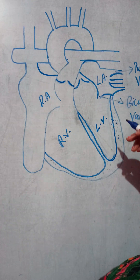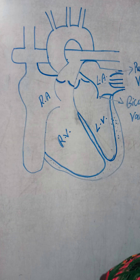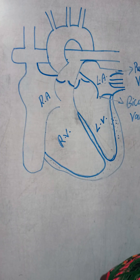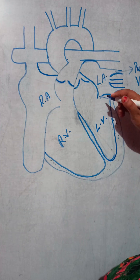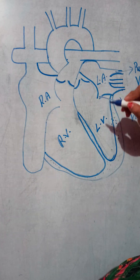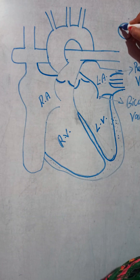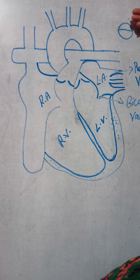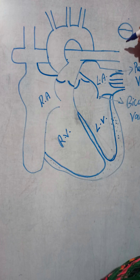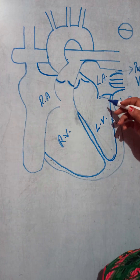The bicuspid valve is also known as the mitral valve. The structure of the bicuspid valve is divided into two flaps. Blood from the back side enters here and moves towards the left ventricle.